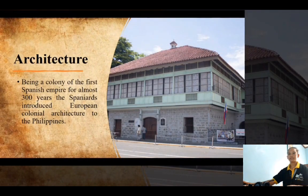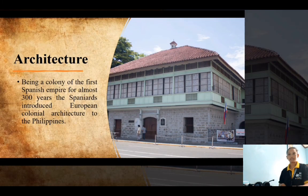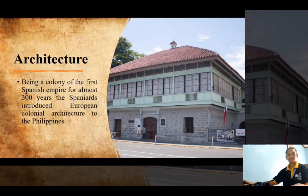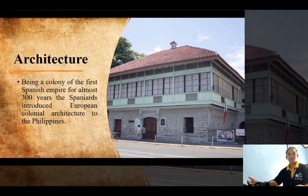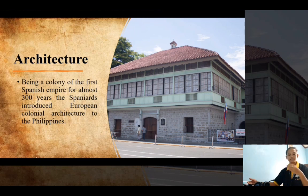Being a colony of the Spanish Empire for almost 300 years, the Spaniards introduced European colonial architecture to the Philippines. The introduction of Christianity brought European church architecture which subsequently became the center of most towns and cities. The Spaniards also introduced stone and rock as housing materials, creating forms of hybrid mixed architecture exclusive to the Philippines. Filipino colonial architecture can still be seen in centuries-old buildings such as Filipino Baroque churches, bahay na bato houses, schools or convents, and government buildings. The best collection of Spanish colonial era architecture can be found in the walled city of Intramuros in Manila and in the historic town of Vigan.